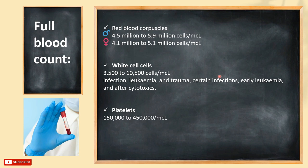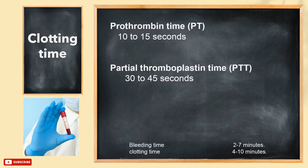Platelets help your blood to clot in case of injury. Here is the normal number of platelets per microliter. Clotting time is of major importance, especially if the patient is going under any form of dental surgery. It is measured by prothrombin time and partial thromboplastin time. They differ because they measure the integrity of different clotting factors and assess the intrinsic and extrinsic systems respectively.